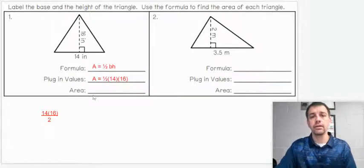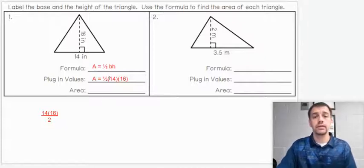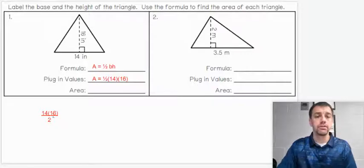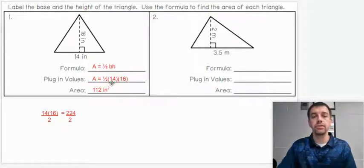And then what I did down here, you can also write area equals base times height divided by 2. It does the same thing as multiplying one-half. So I wrote down here the process with which I will solve. 14 times 16 gives me 224. Divide that by 2, you should get 112 inches squared.